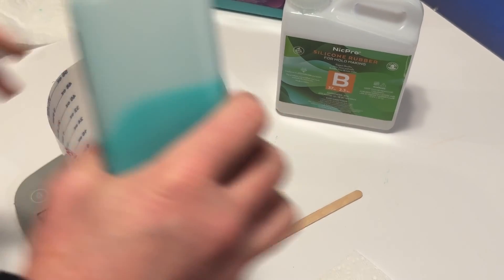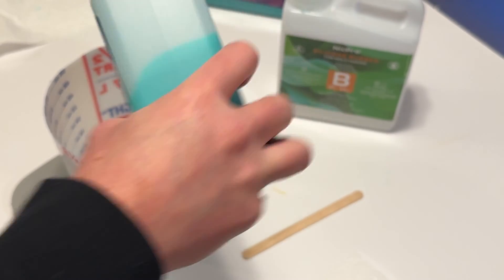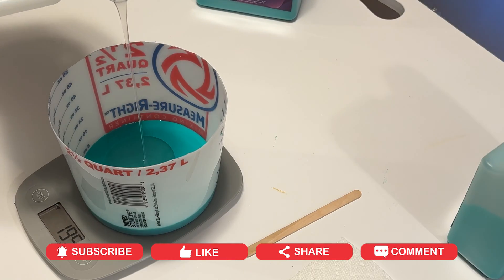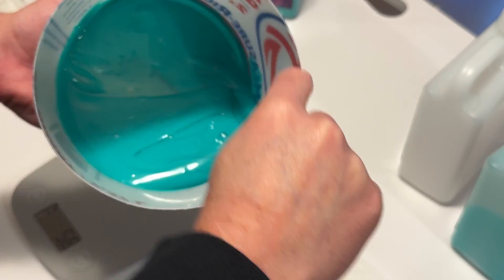Because when you're done, the silicone just comes out really nice. And just pour it in, pour both parts, and then stir. Make sure you scrape the sides of the bucket. You don't want to have it not get cured.